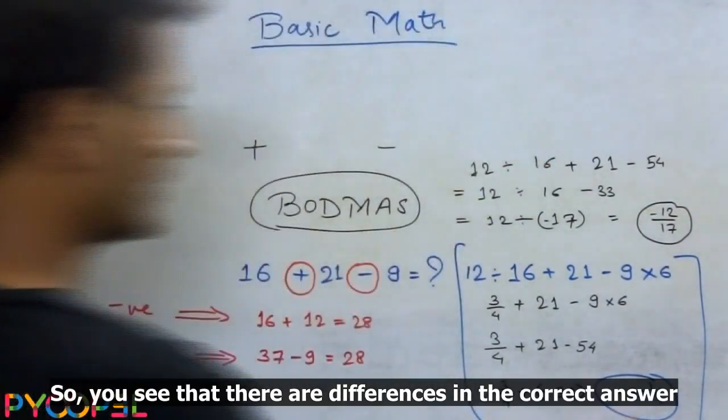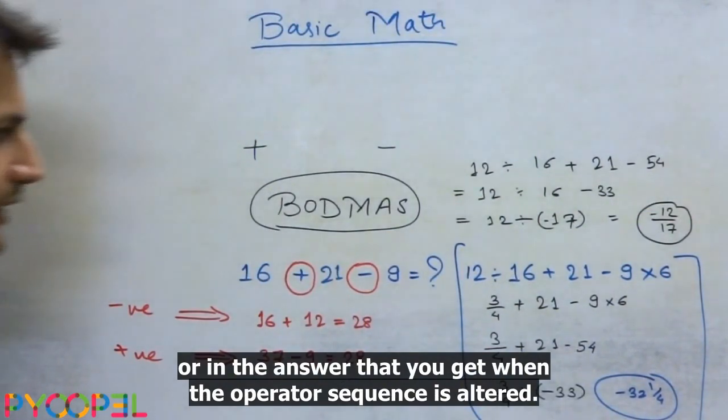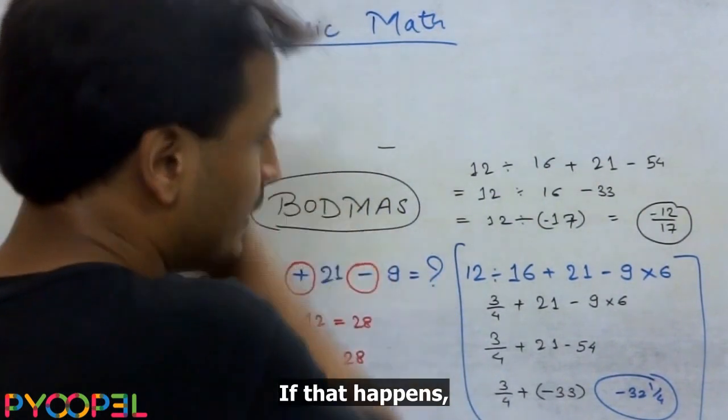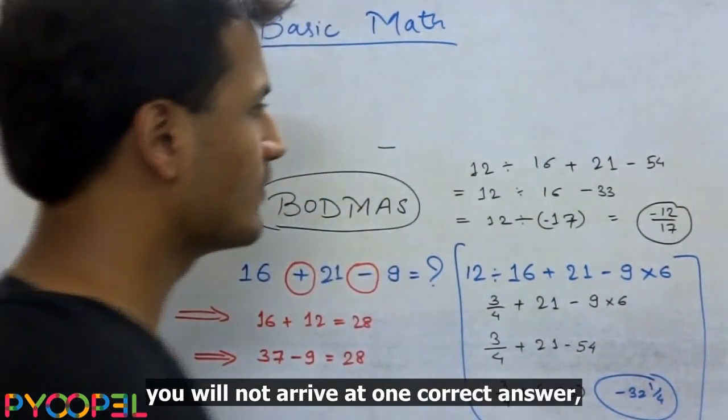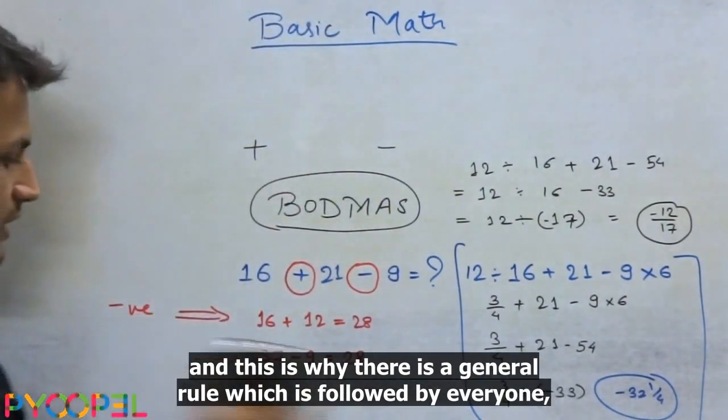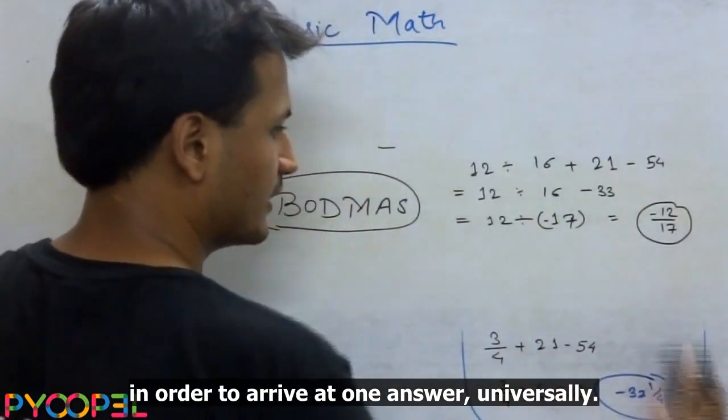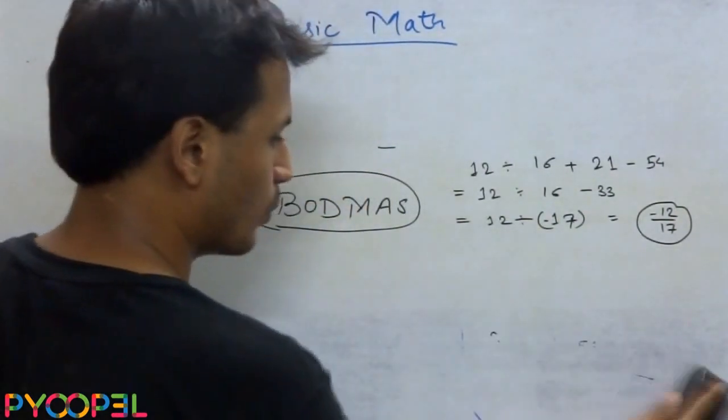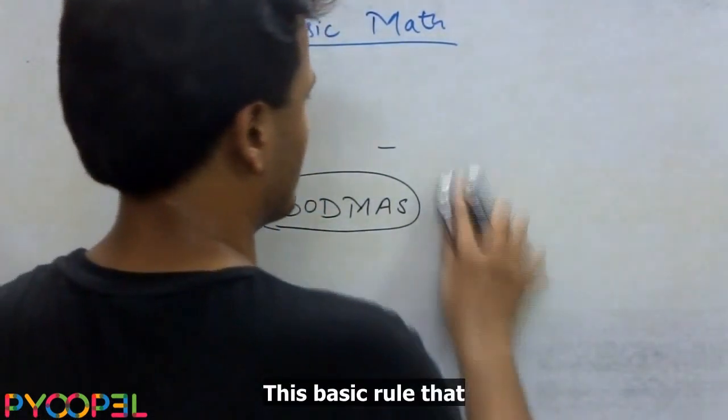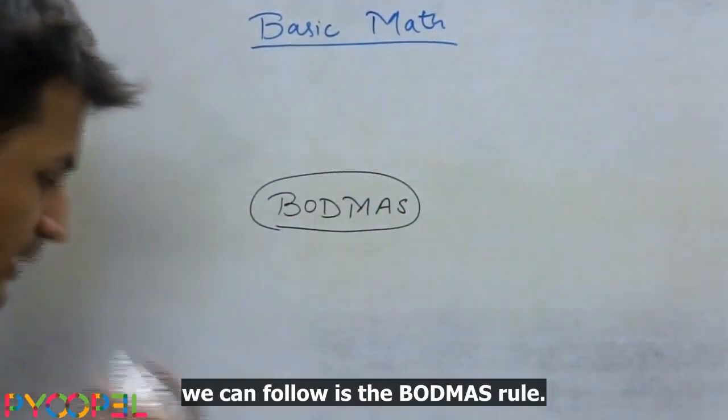So you see that there are differences in the answer that you get when the operator sequence is changed, is altered. If that happens, you will not arrive at one correct answer. And this is why there is a general rule which is followed by everyone in order to arrive at one answer universally. Now this is the basic rule that we can follow is the BODMAS rule.